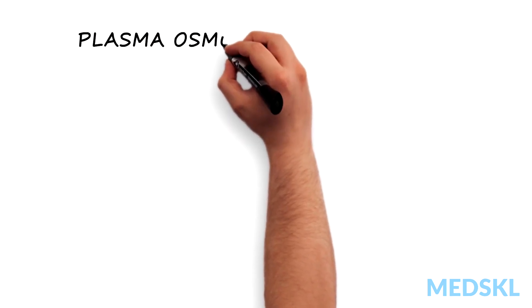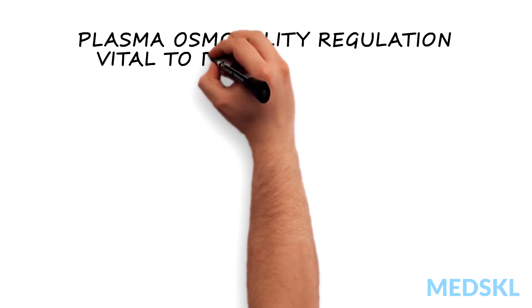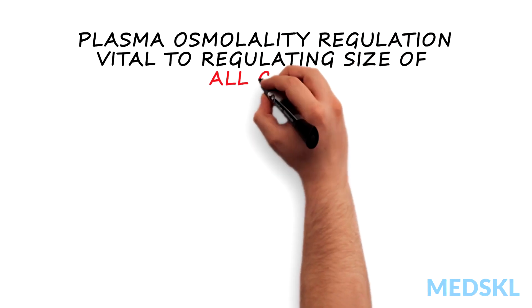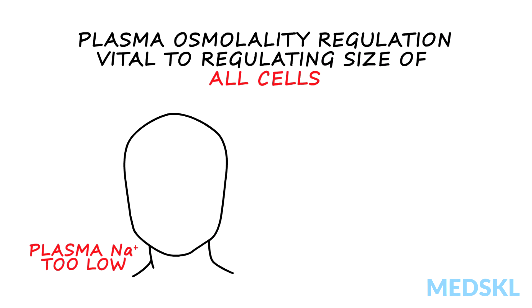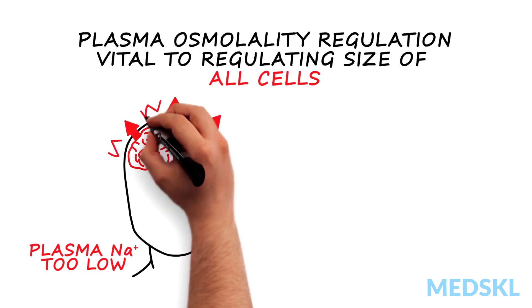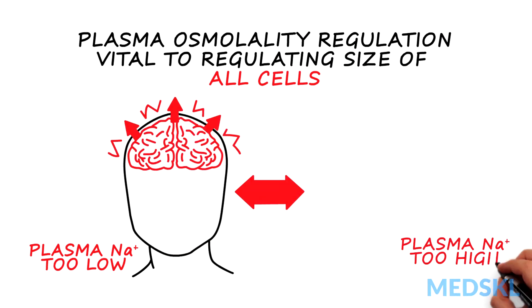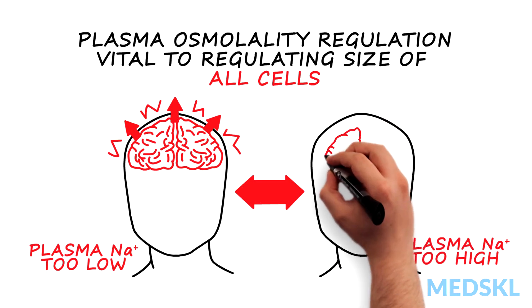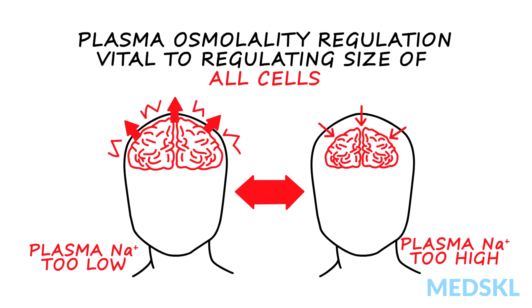Remember, the regulation of plasma osmolality, as measured by plasma sodium, through the body's handling of free water is critical in regulating the size of all cells. If patients are hyponatremic, it can result in dangerous brain swelling. But if you correct for this too quickly, it can cause the problem to shift in the opposite direction, resulting in brain shrinkage and osmotic demyelination.